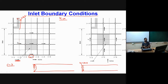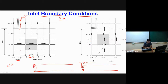Similarly, at the inlet boundary we solve the y-momentum equation. For the vertical velocity cell v, if the flow is parallel to the x-axis, v_in = 0. If the flow enters at an angle, both u and v components must be specified. One important point: for the v cell, the specified velocity value acts on a scalar cell face that is actually outside the physical boundary of the domain.